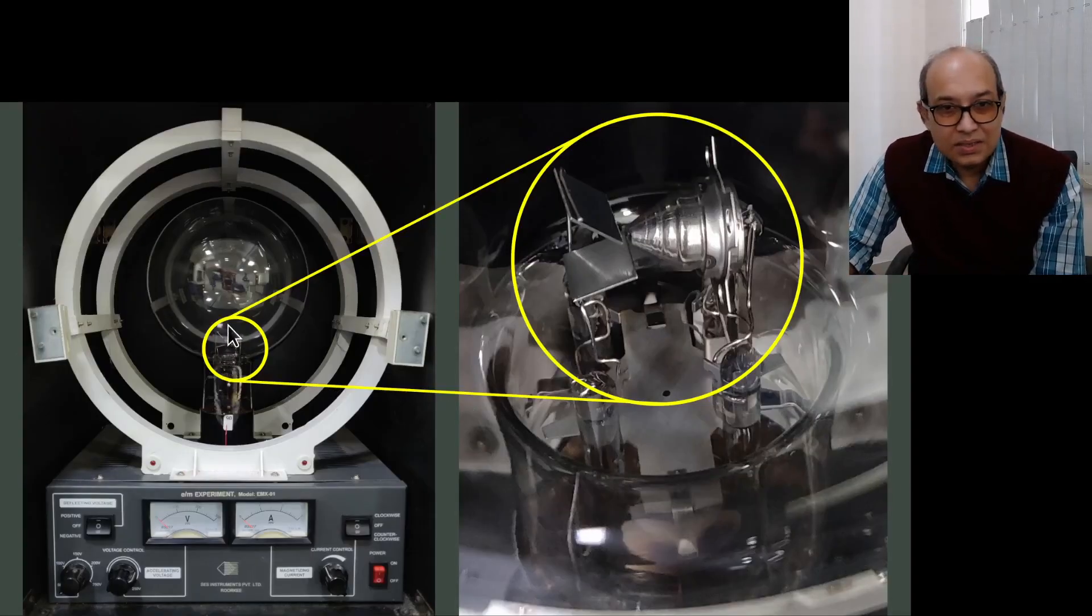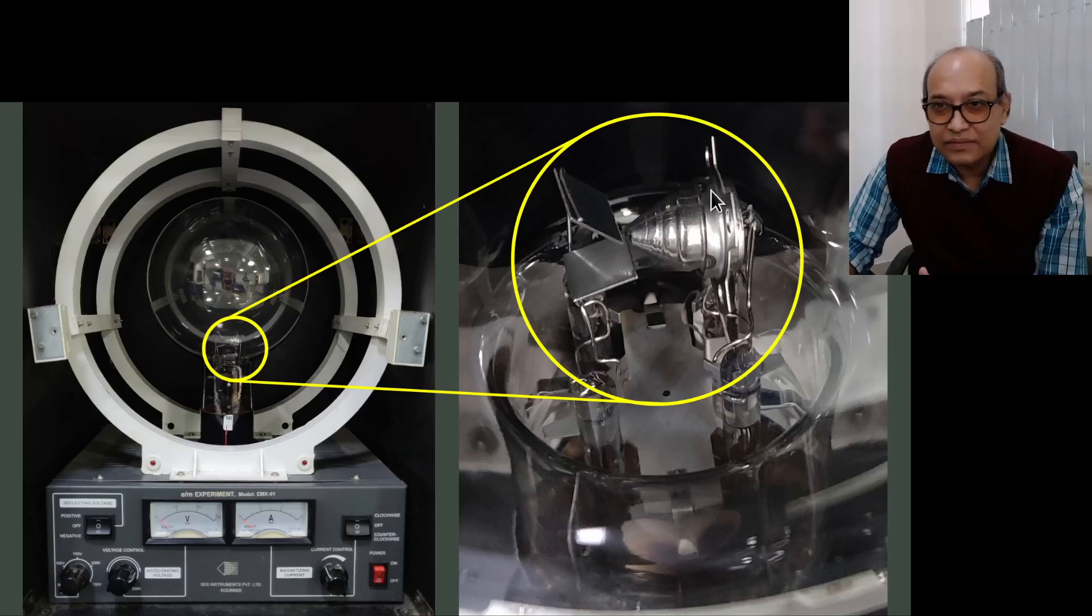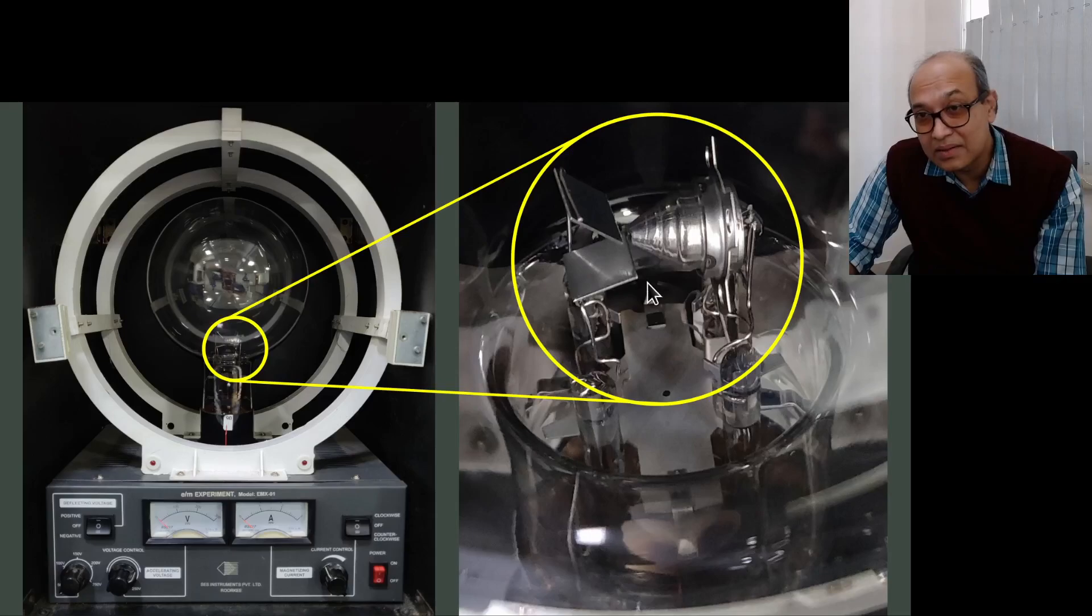Here is a magnified view of that electron gun, the one which is in the glass bulb. Or the one we are actually using. So the deflecting plates are there, and then this anode side, and the tiny hole here.